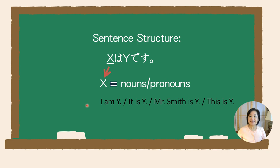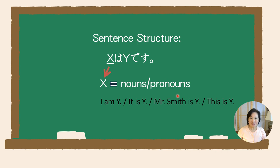Let's break down this sentence, X は Y です, step by step. The X here is where you place your topic. You can put different nouns and pronouns — meaning you can change X to anything like I, he, she, it, or people's names. By switching out X with different nouns and pronouns, you can make different sentences with different topics.